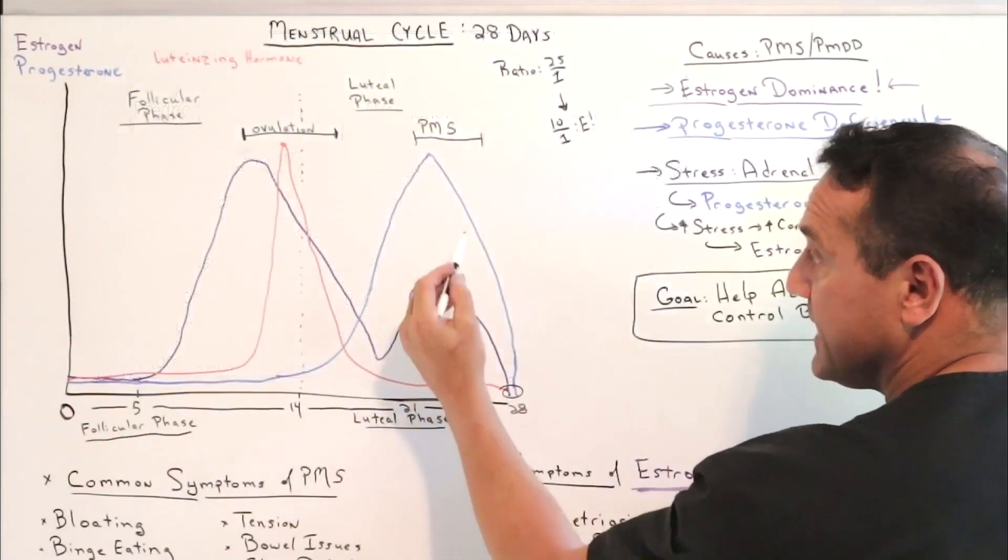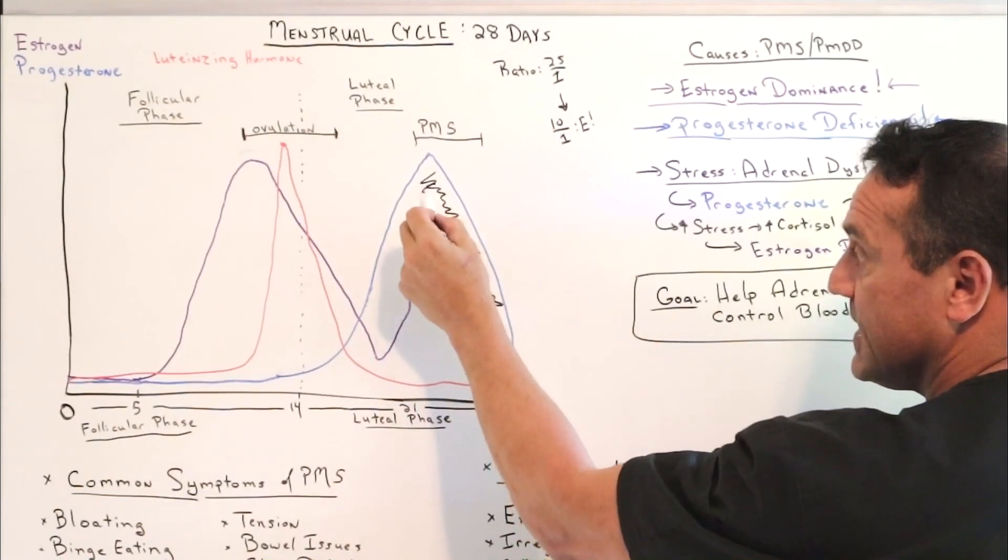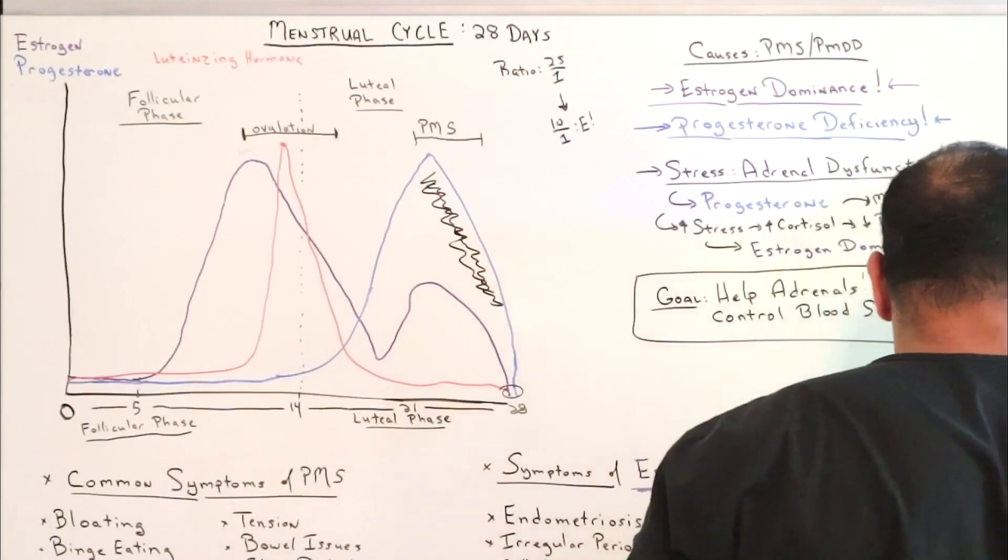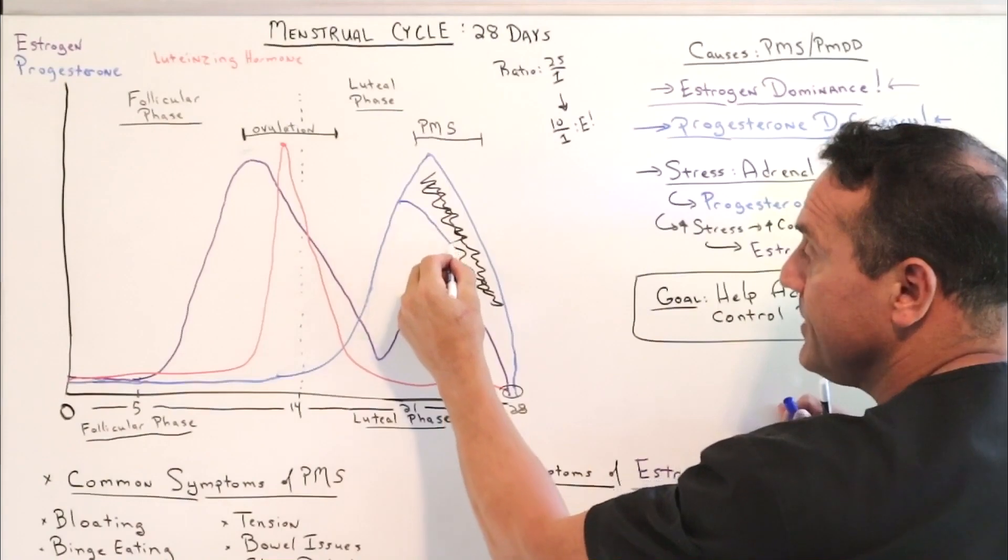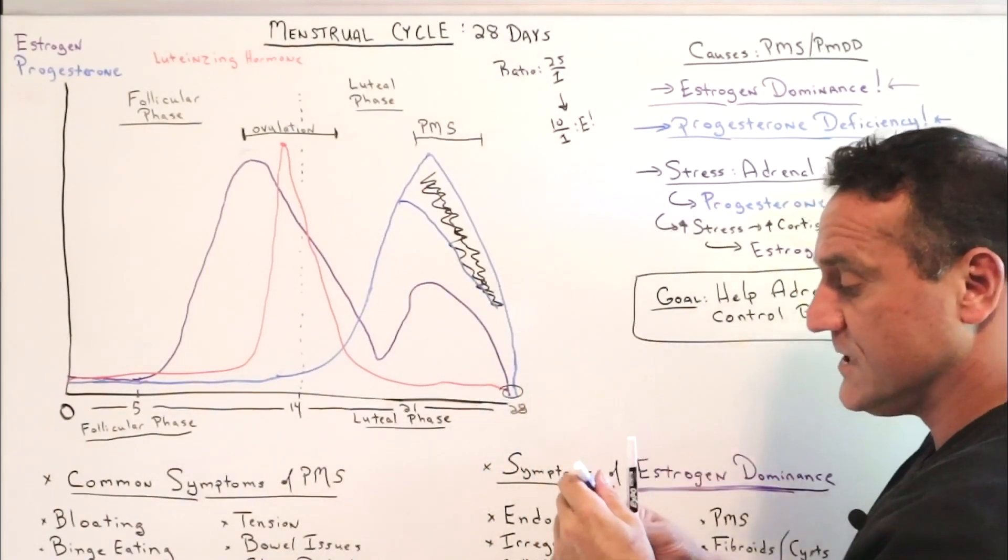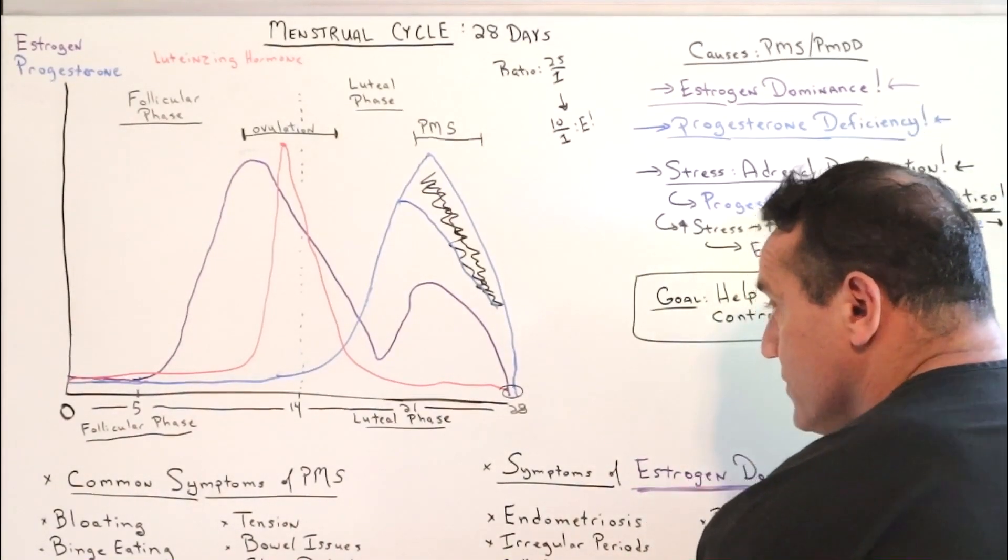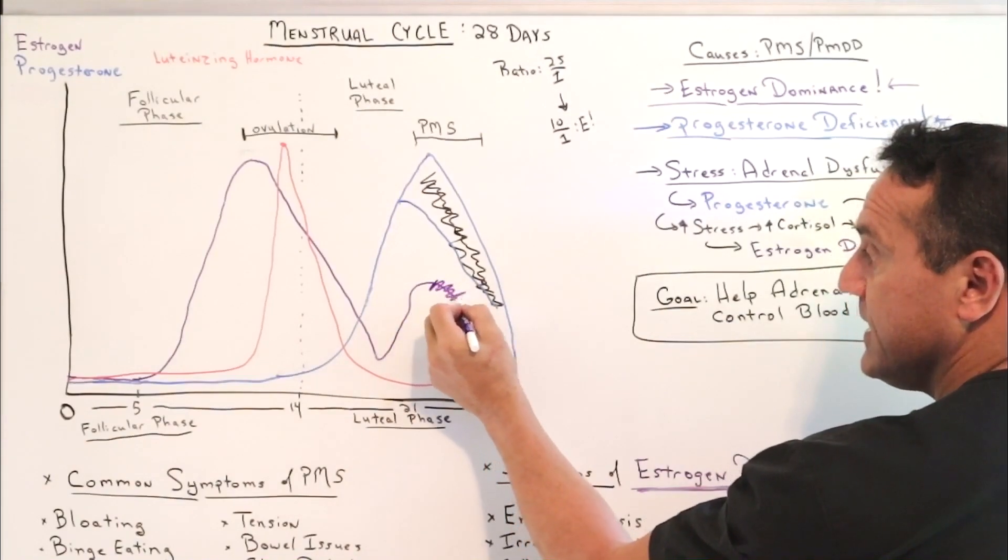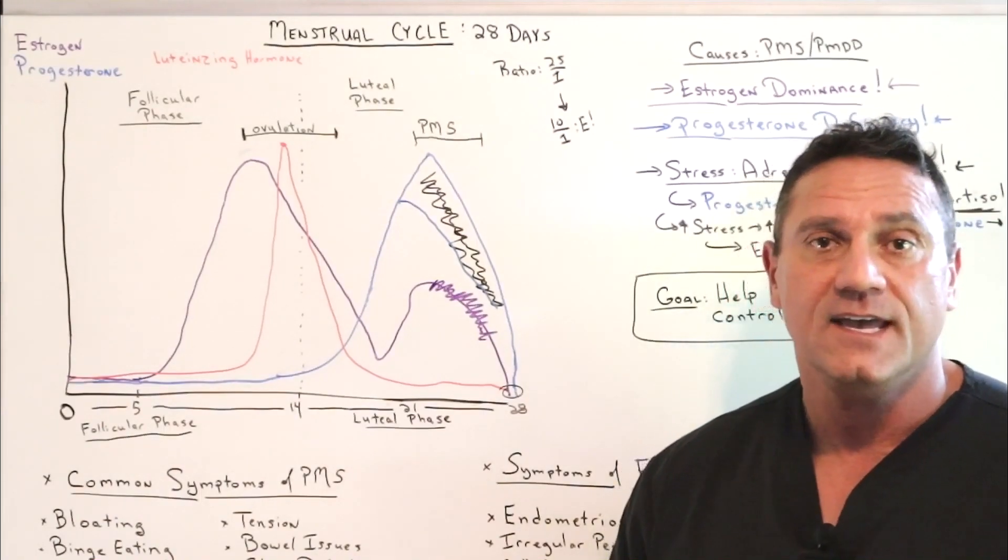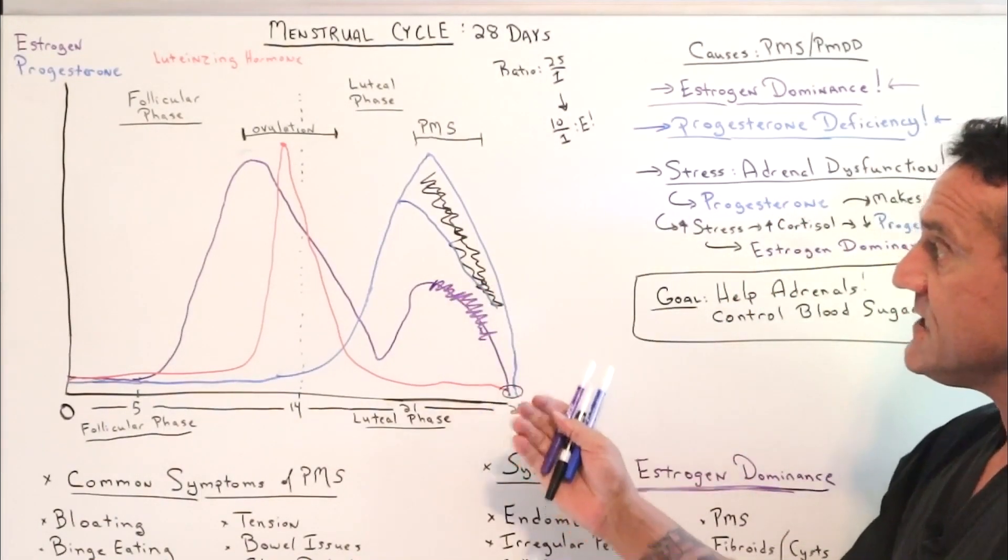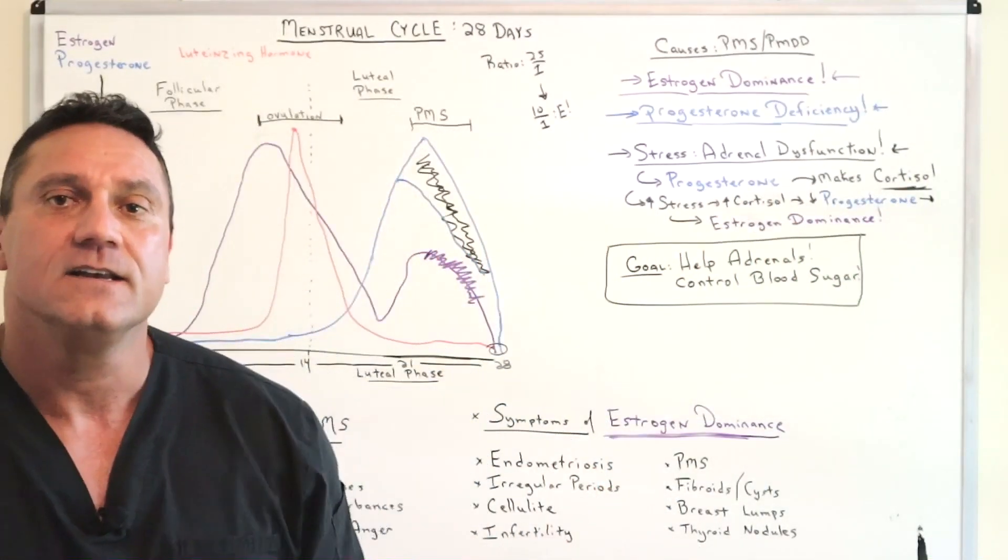So let's say you have in the last part of the cycle, this is where the break is. You're stressed out. So then now progesterone takes a dip. The ratio changes from 25 to 1 to maybe 10 to 1. And in turn, the fluctuations of estrogen, that's what causes the PMS symptoms, headaches for example. So it's the last half, the PMS, the last half of the cycle that causes PMS. Why? Adrenal dysfunction.